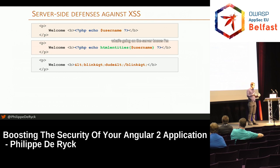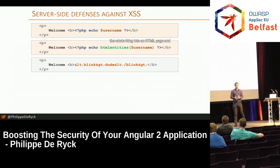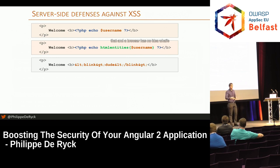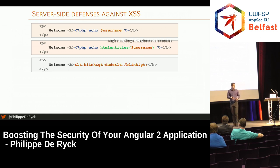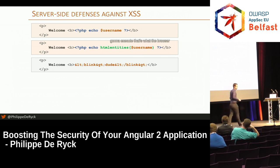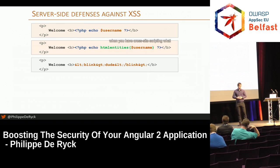The server builds a page, packages everything into HTML, and gives it to the browser. The browser then processes it with no idea what's going on — it sees a script tag inside an H1 and doesn't know if it's supposed to be there. When the browser is in doubt, it simply executes it. That's when you have cross-site scripting.